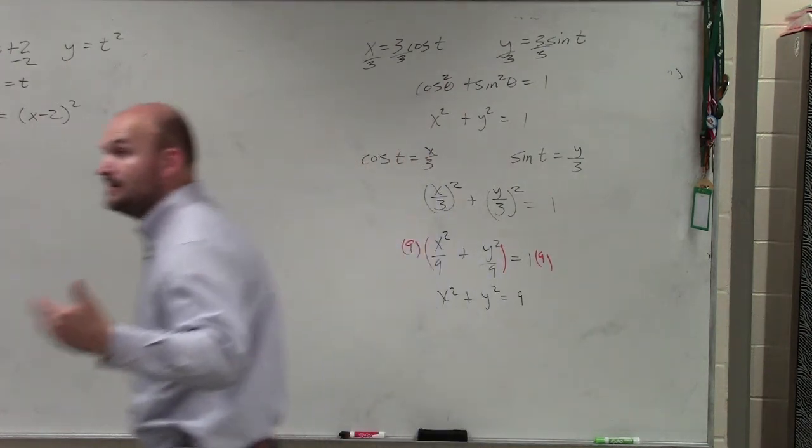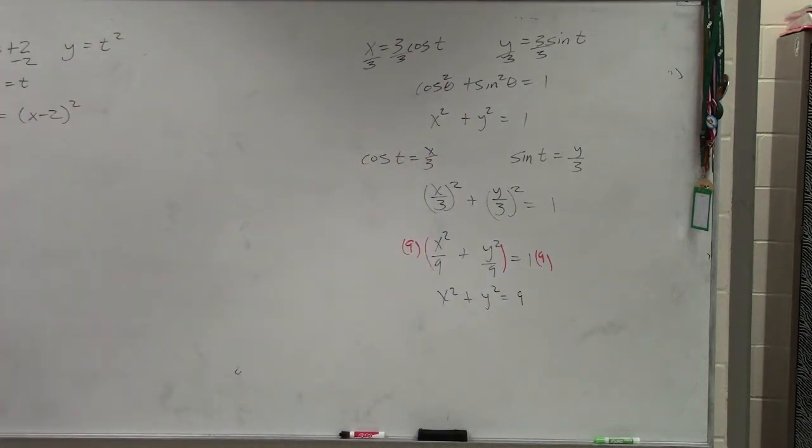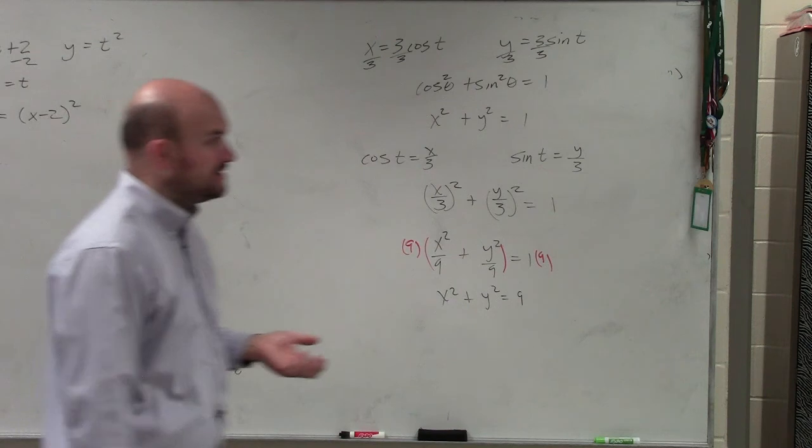And furthermore, if you guys remember that equation I wrote there, if x squared plus y squared equals nine, that means it's a circle with a radius of three, right? And that was from your old geometry days.